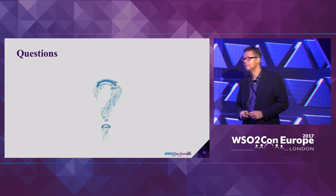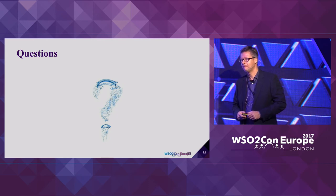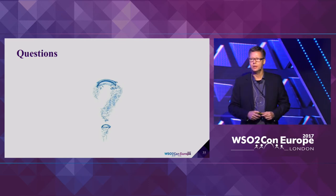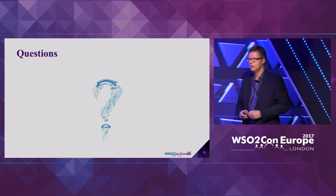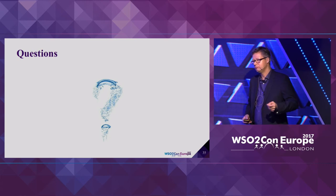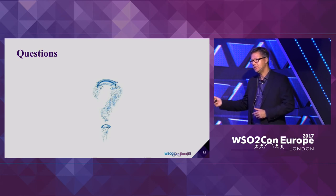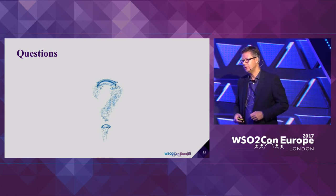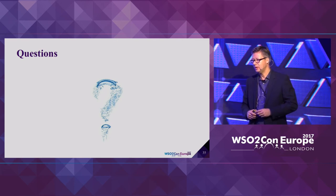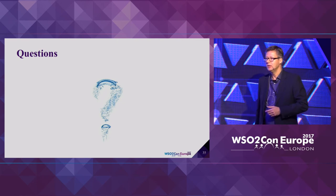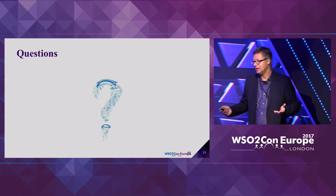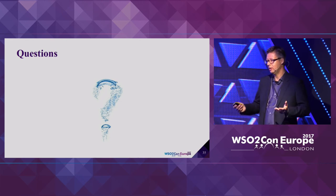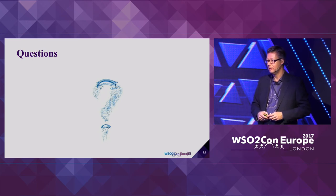[Audience question]: You mentioned that the canonical data model is quite pricey — what are the main cost drivers? The main cost driver is building two translations: one from the consuming application to the canonical data model, and one from the canonical data model to the providing application. The benefit is that it's much easier to replace applications, but the investment is making two translations instead of one. It will only be beneficial when you have an area where application replacement might be more frequent.